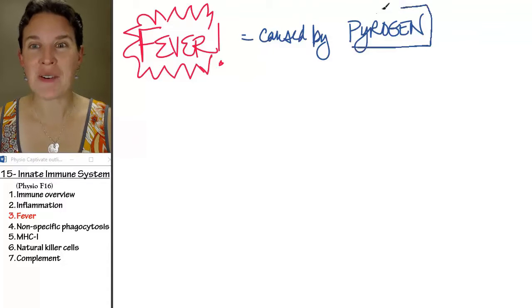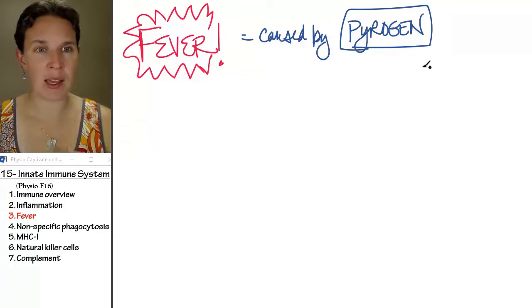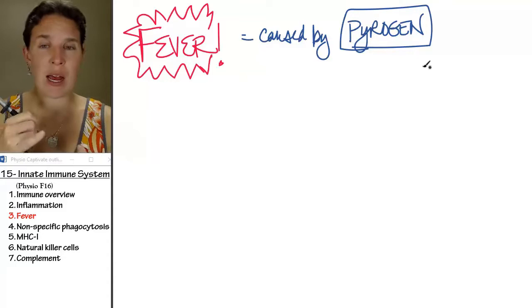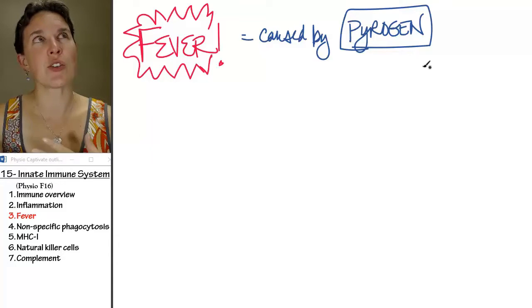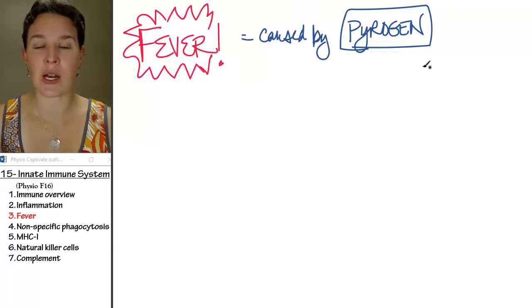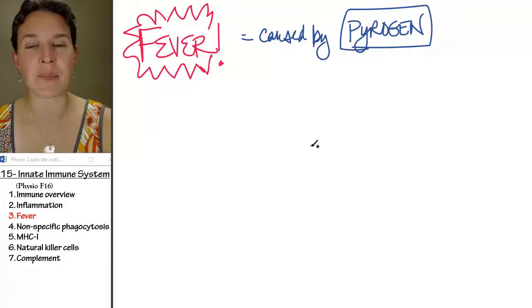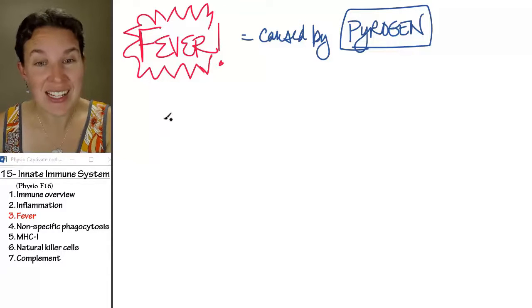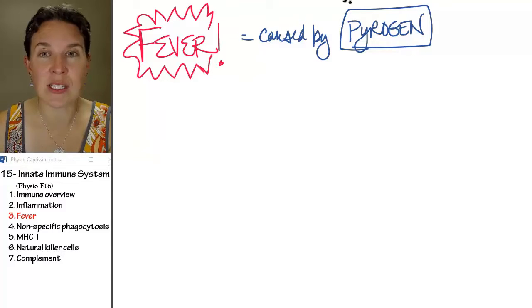Pyrogens are produced in response to an invading pathogen, usually not damaged tissue. And so the pyrogen, this is really interesting - pyrogens enter the bloodstream.